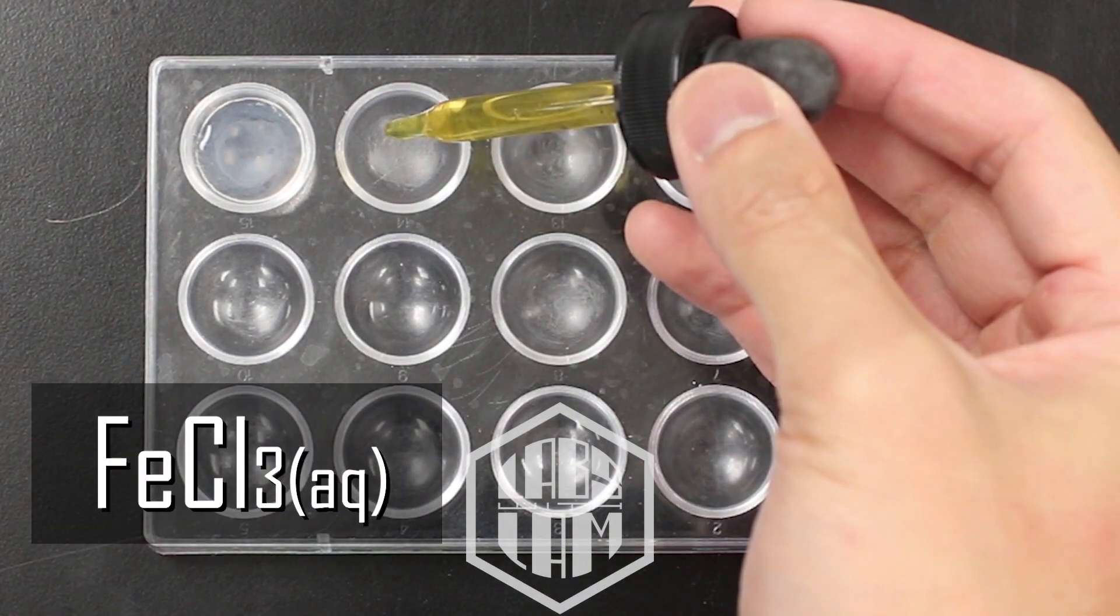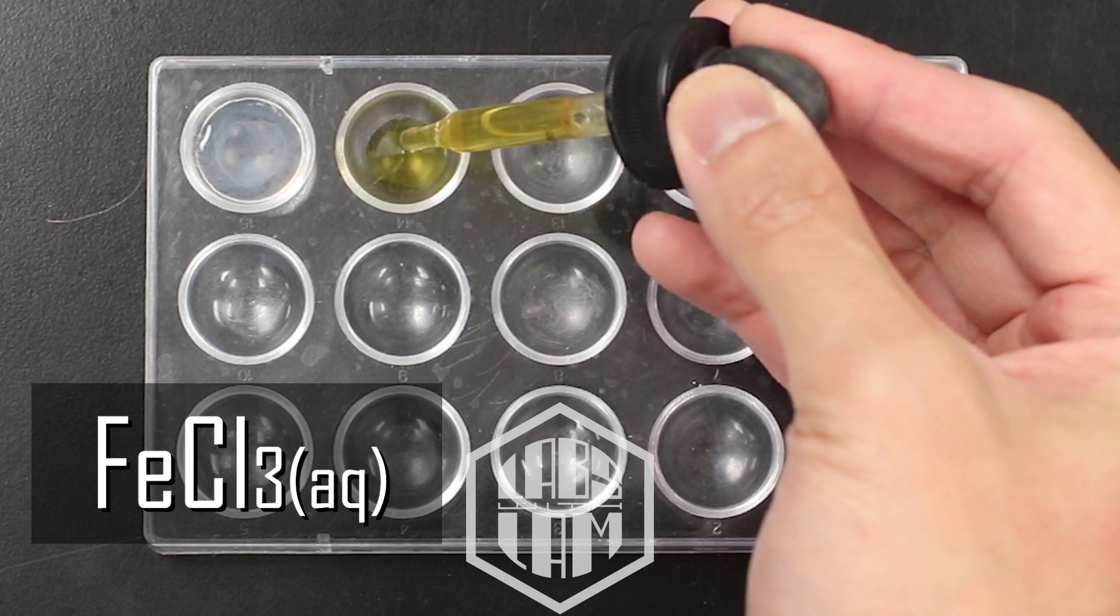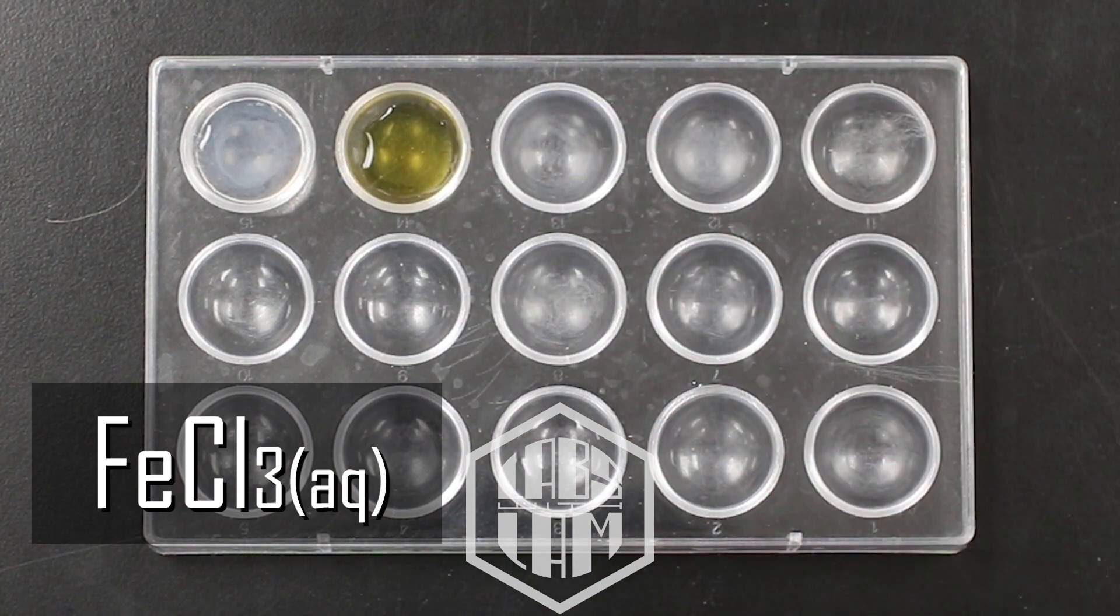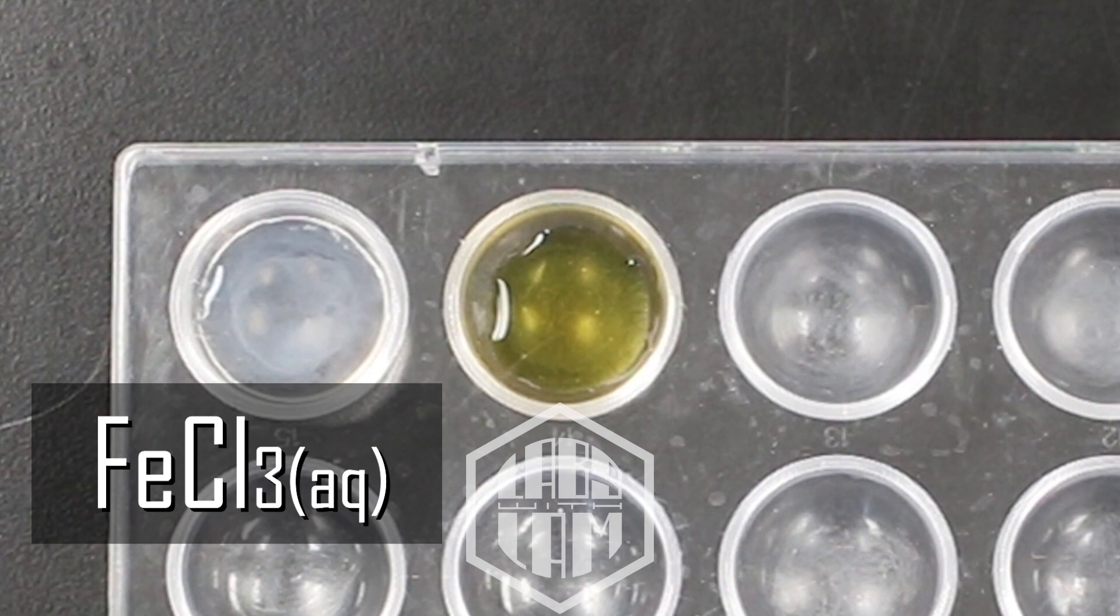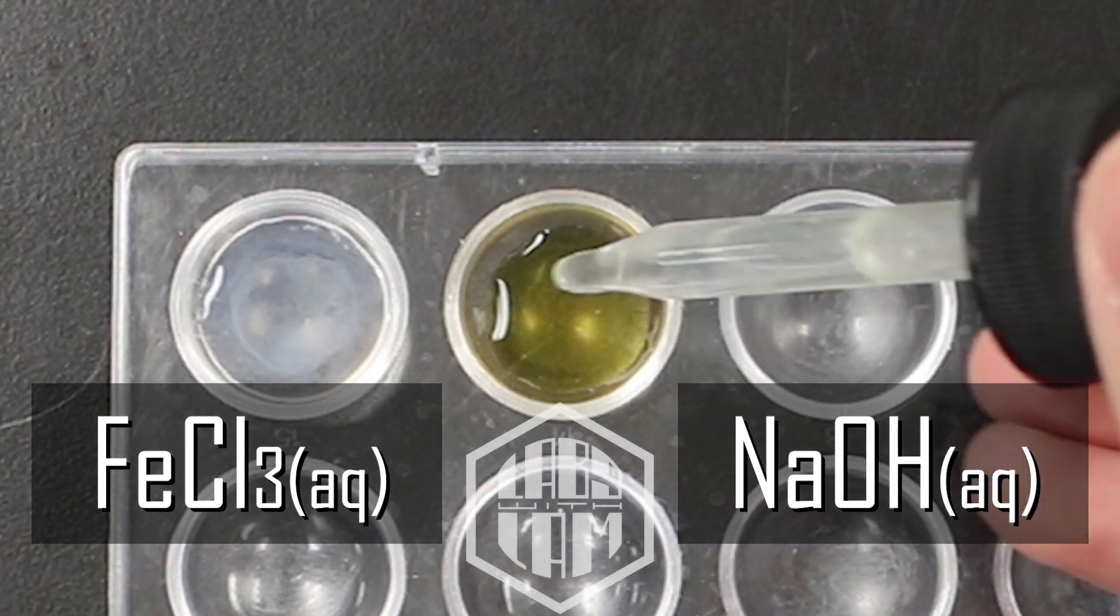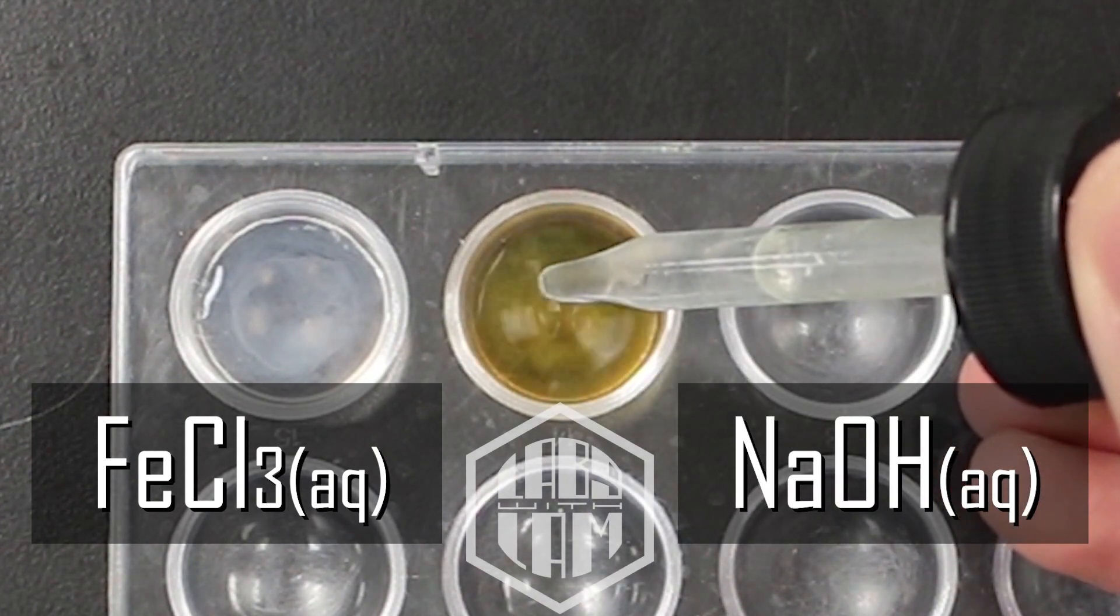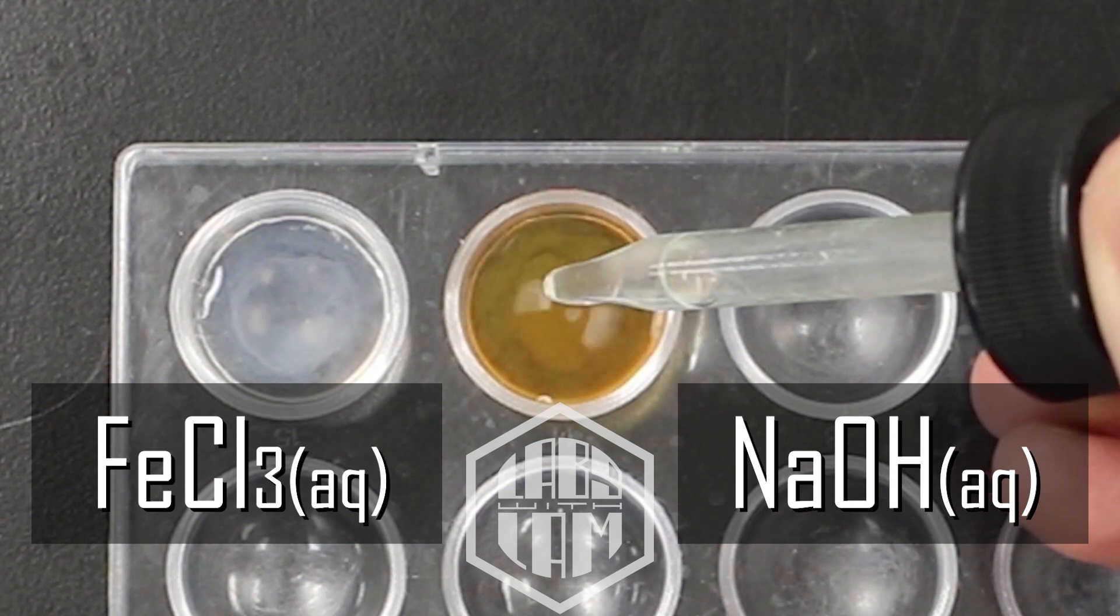Next, we've got iron chloride. Just a reminder, notice that it's already yellow. And again, we're adding sodium hydroxide to the solution. Make sure that you're observing the changes that occur.